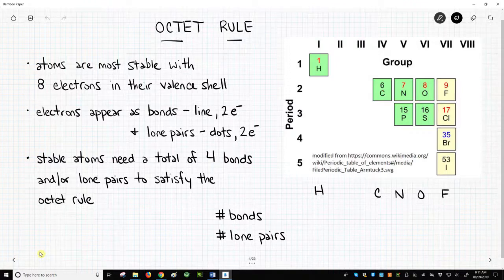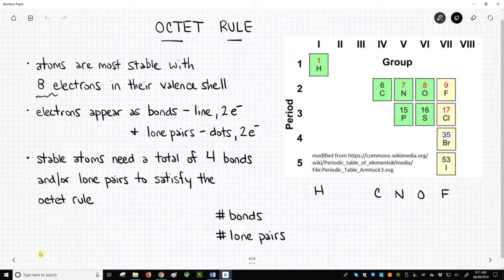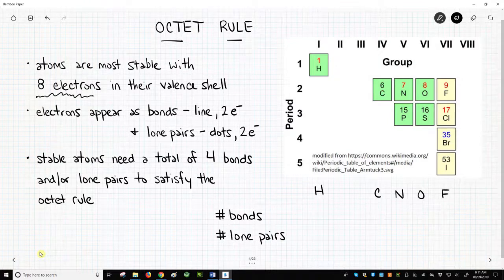Aside from hydrogen, these elements almost always obey the octet rule. So what is the octet rule? The octet rule states that an atom in a molecule is most stable when that atom has eight electrons in its valence shell.